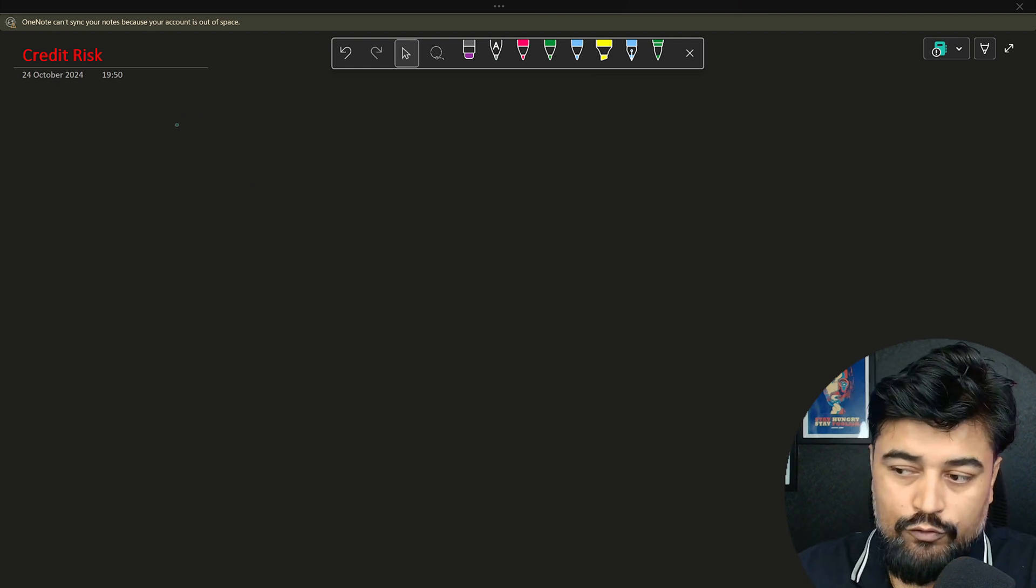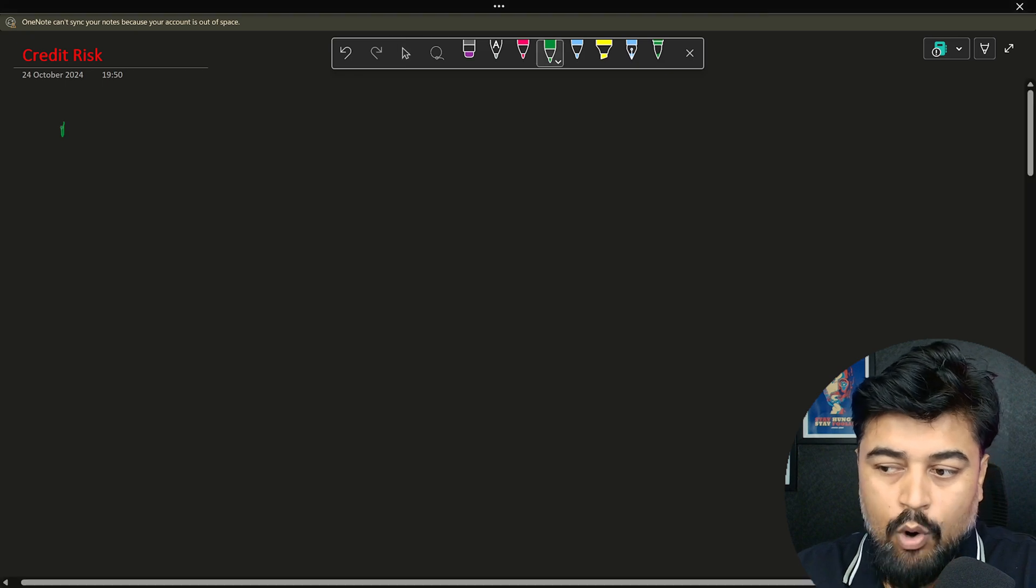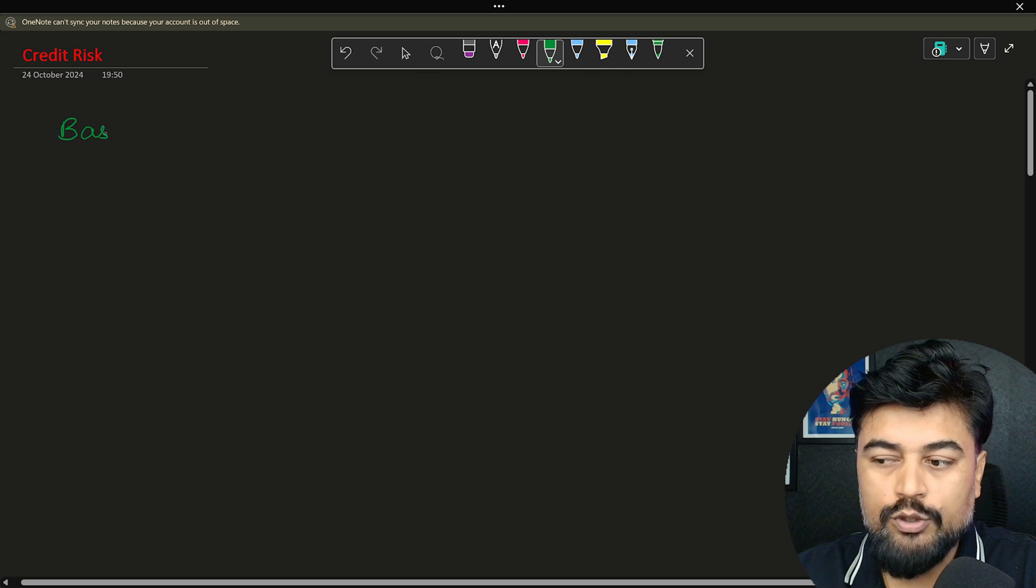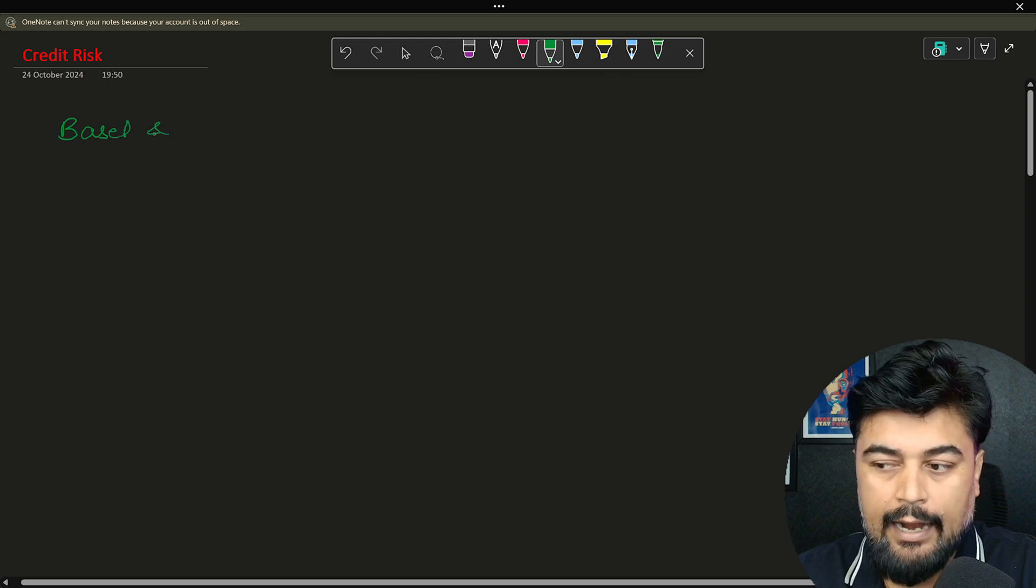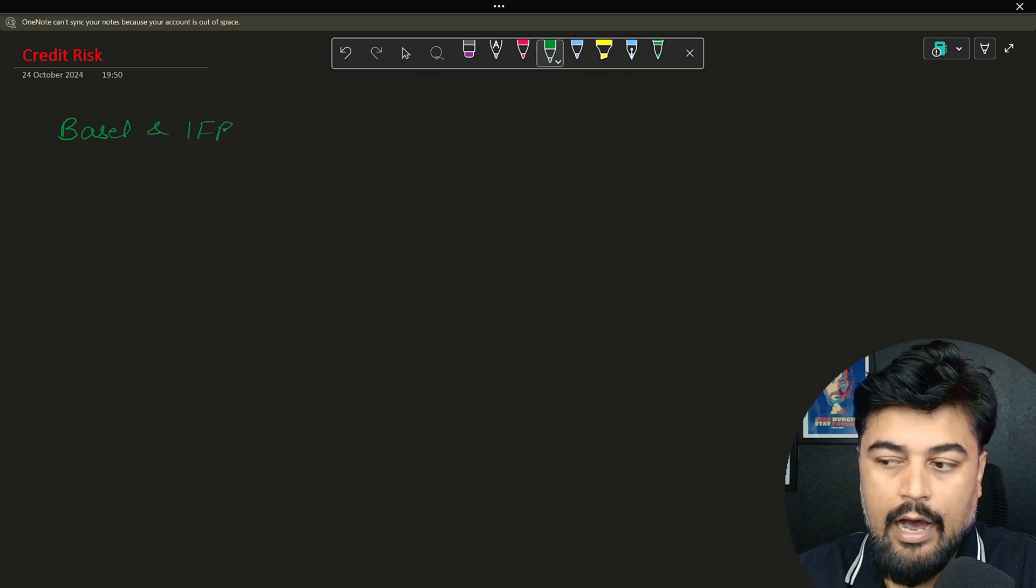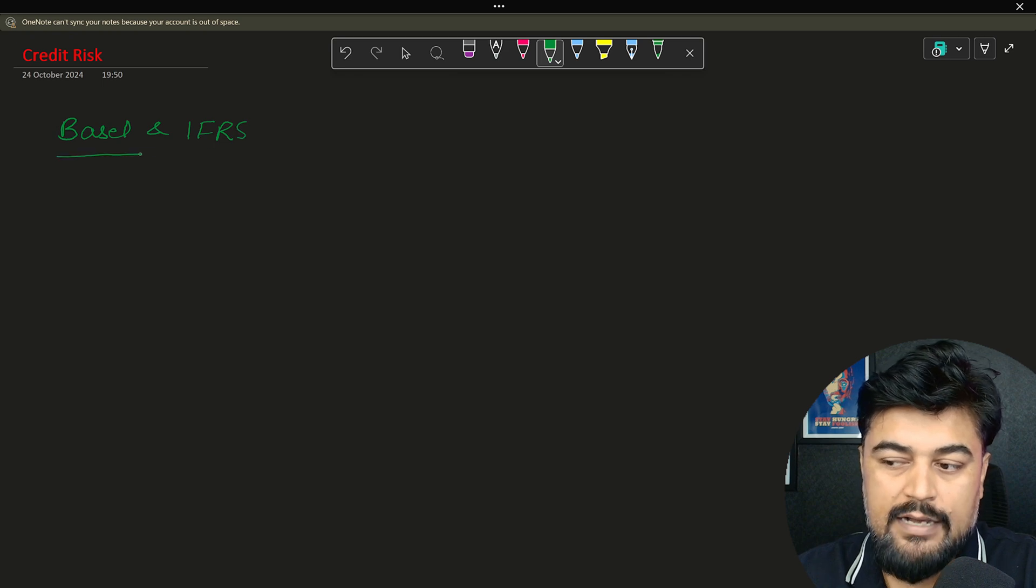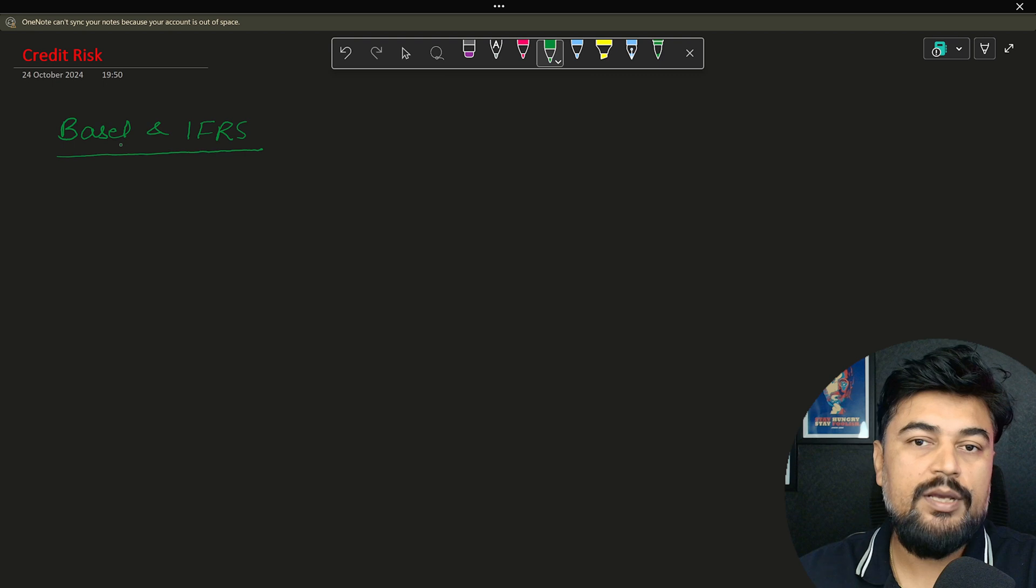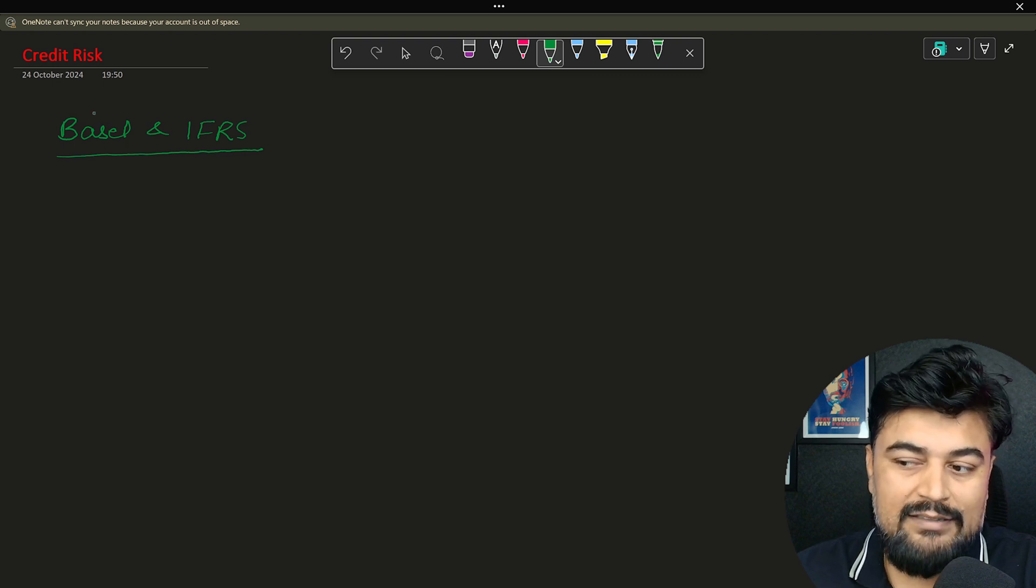There are some models which are highly used like Basel and IFRS. Now what is Basel and IFRS? These are two separate guidelines. Basel is followed more in Europe because this is created by a European standard, and then IFRS is also highly used in United States.